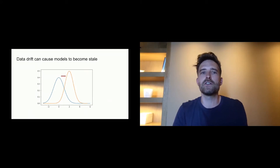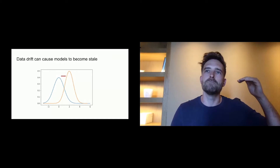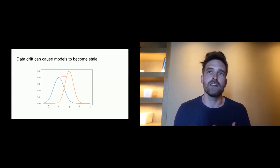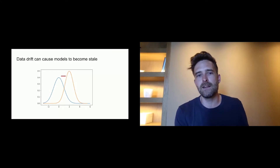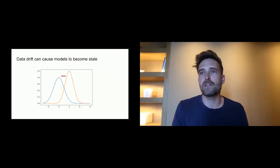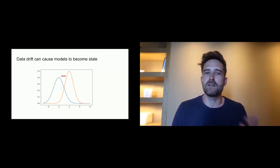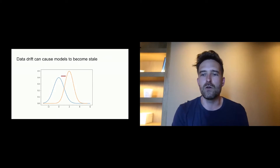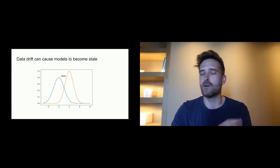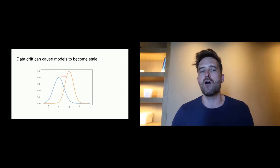Data drift refers to any change that has occurred in the data being fed to your model. This can happen for technical reasons — maybe in an upstream data pre-processing pipeline the input schema has changed, or a field has been added or deleted. More subtly, feature distributions can change over time. For example, a model deployed in a hospital might start to see younger and younger adults because a ski resort was opened nearby. That change in the demographic of your population can cause your model to suffer. Model deployment is a continuous process and it may be necessary to retrain — the question is how do you know when?